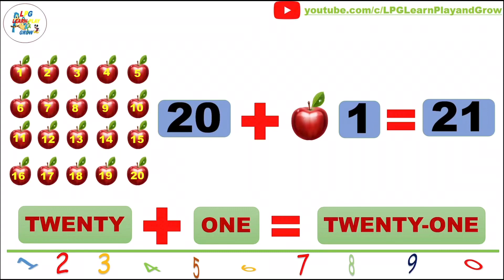When we add one more apple, it becomes 21. Now, we learn the spelling of 21: T-W-E-N-T-Y, twenty, O-N-E, one.